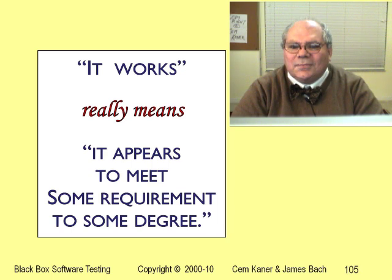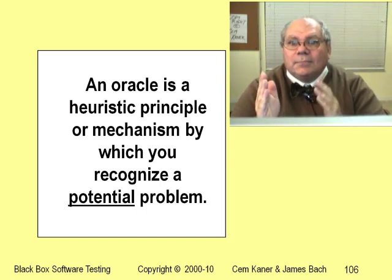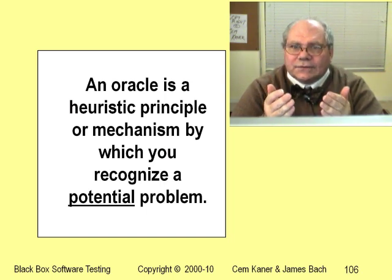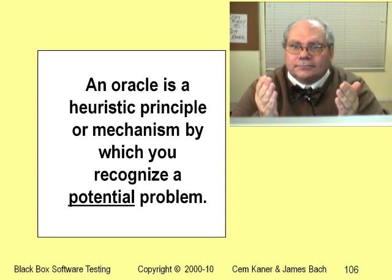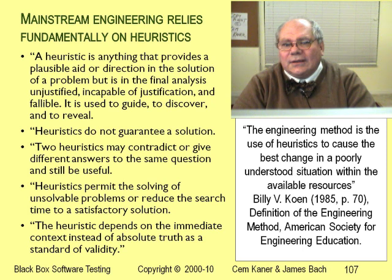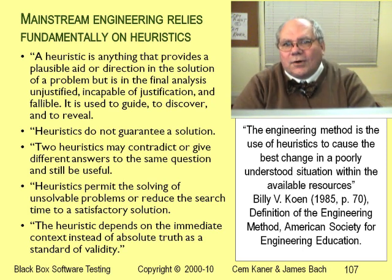Any decision support tool that is sometimes wrong but still useful is a heuristic. All oracles are heuristics — they're fallible, but they're useful. Reliance on heuristics is a basic fact of engineering. Billy Cohn presented this eloquently in a classic introductory engineering text: heuristics can contradict each other and lead you to incorrect conclusions, but they allow us to make progress on problems that have no authoritative solutions.